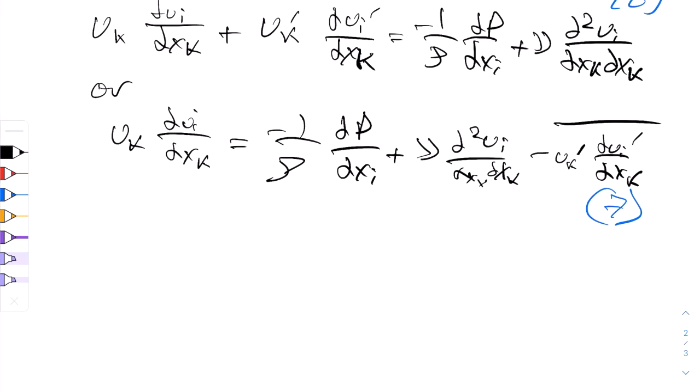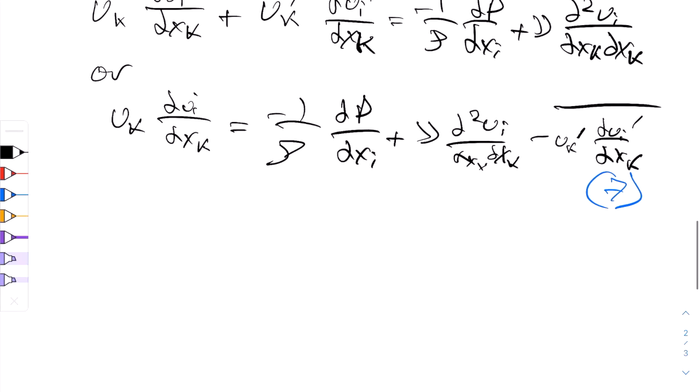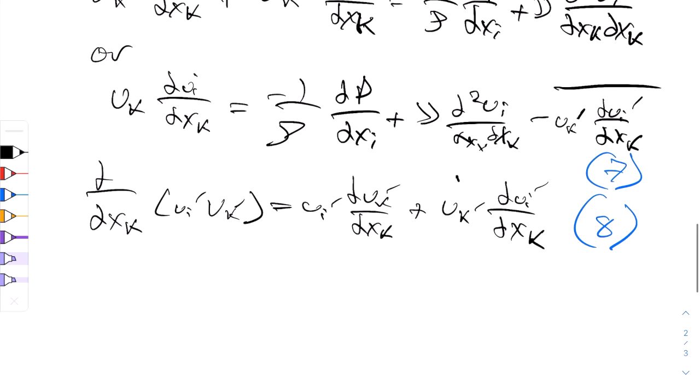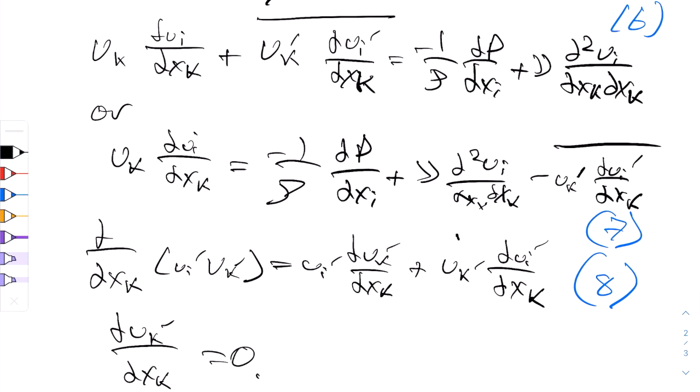So in 7 I've simply moved that convective term to the right hand side. And why is this? So in this, you'll see that I can write partial partial xk of ui prime uk prime is equal to ui prime partial uk prime partial xk plus uk prime partial ui prime partial xk. We'll call this equation 8. And you'll see also, due to the continuity equation, partial ui prime partial xk is of course 0, if it's an incompressible steady flow. So using these assumptions, you can see I can get equation 7 from 6.